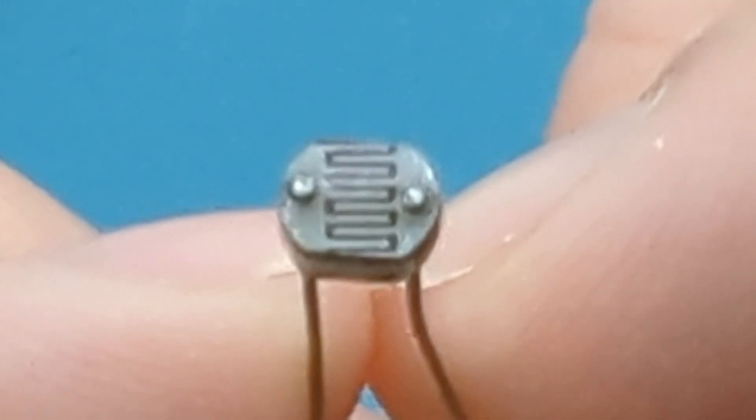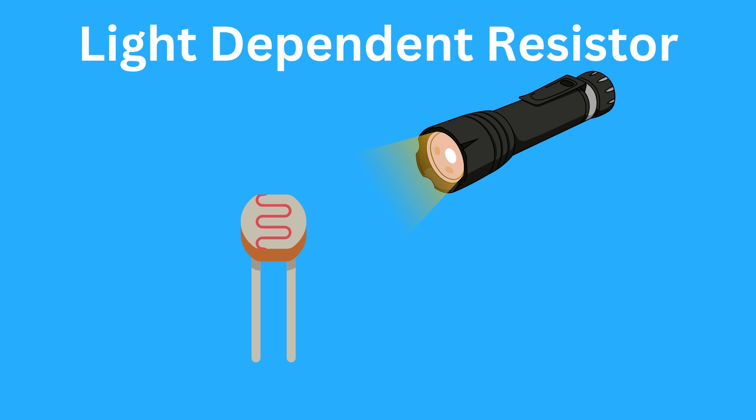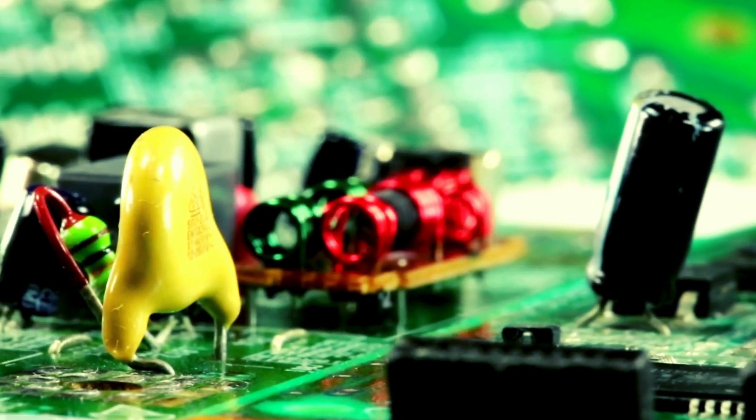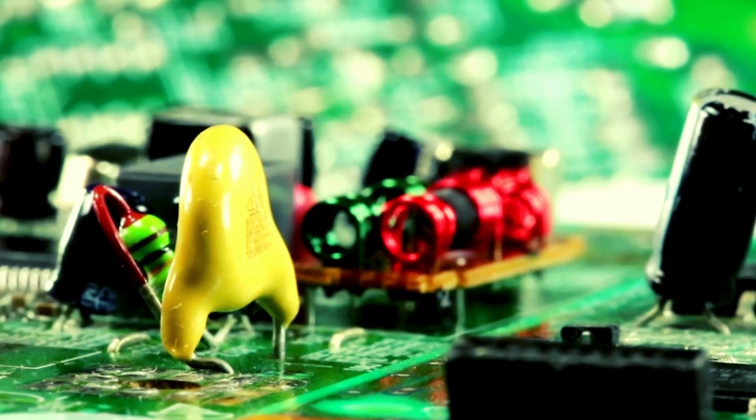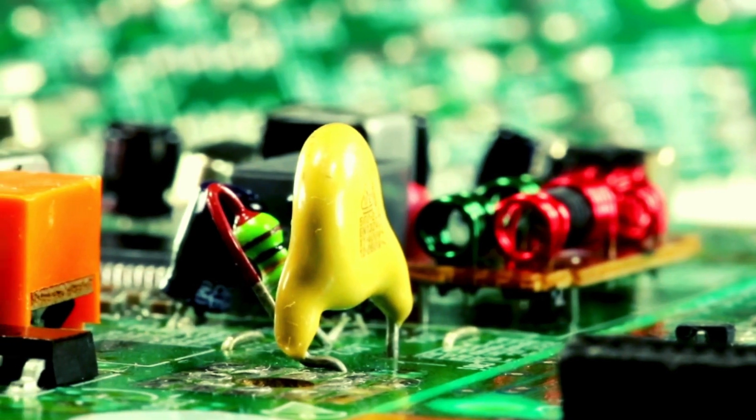Before we get into the testing process, let's quickly go over what an LDR is. A light-dependent resistor is a type of resistor whose resistance changes based on the amount of light falling on it. It's commonly used in light sensing circuits and various electronic projects. Knowing how to test it properly can help you troubleshoot and optimize your circuits.